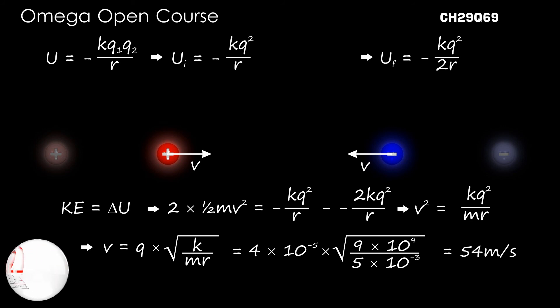Thus, when 50 centimeters apart, both particles will move with a speed of 54 meters per second. This is our answer.